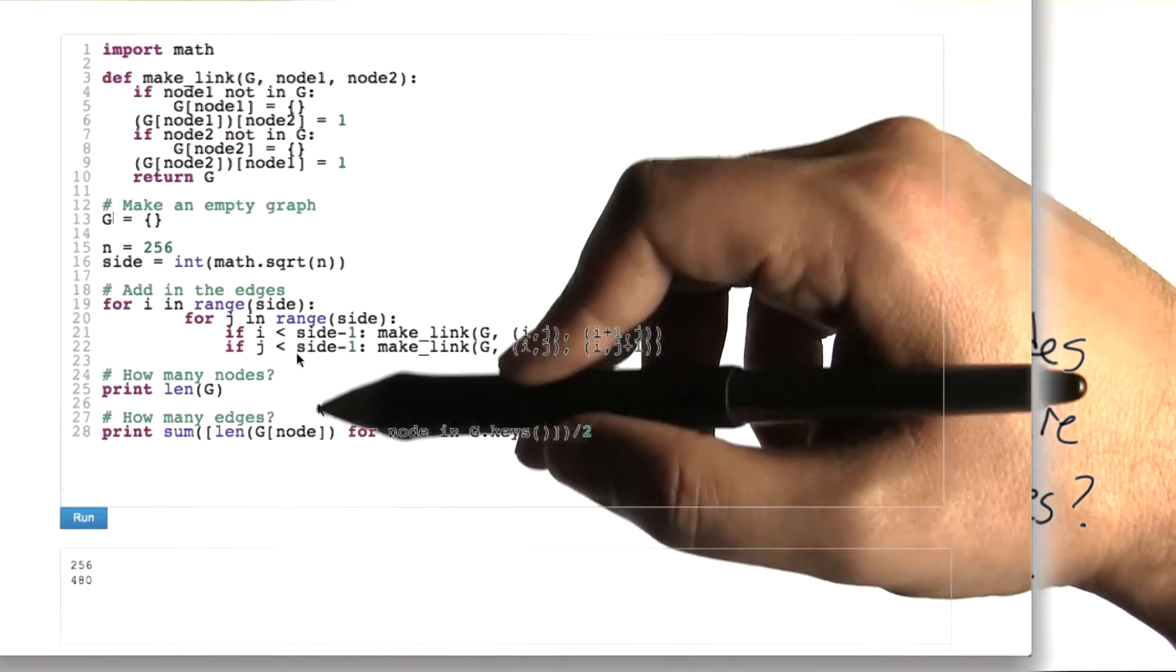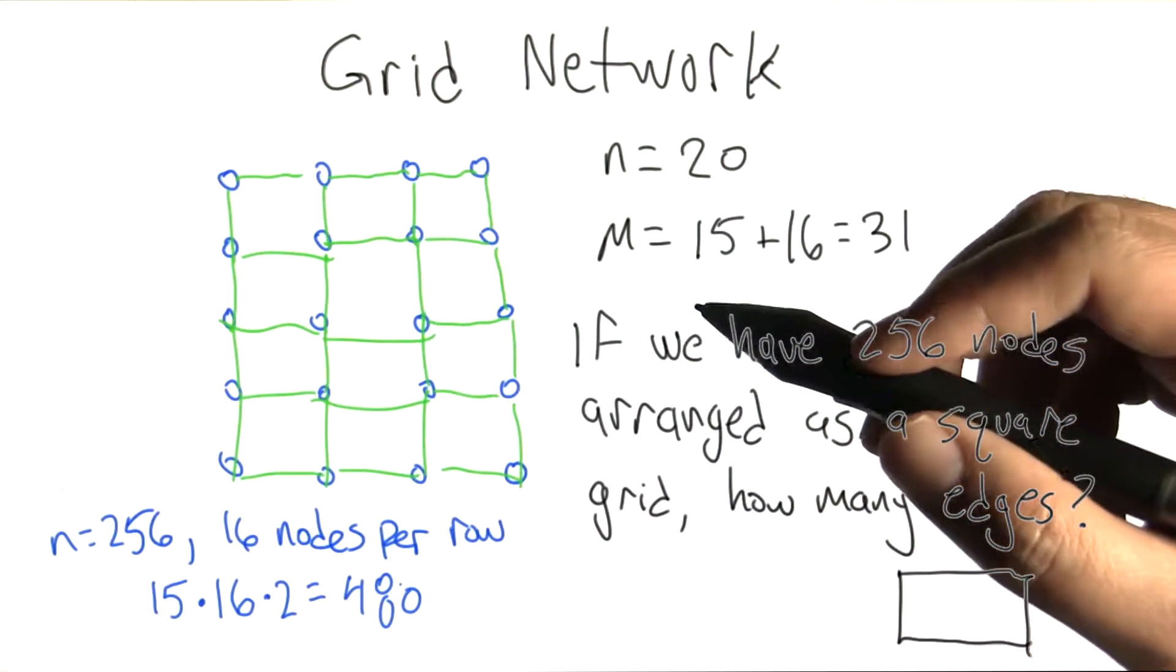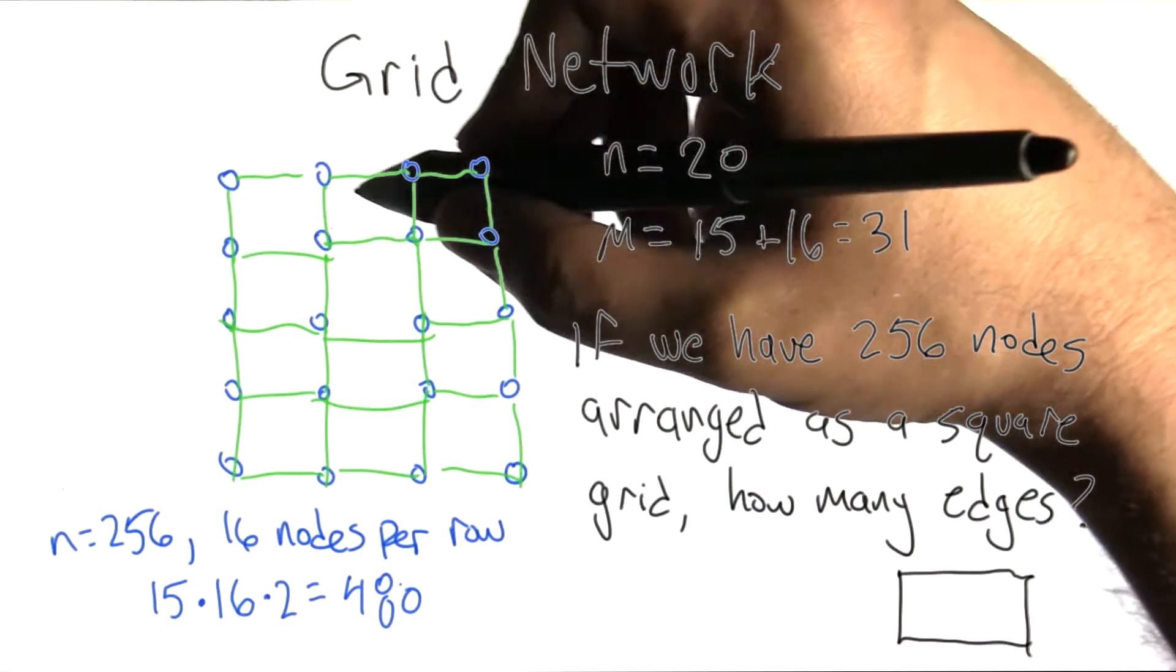So we print out the number of edges in this graph that we created and we get 480. We could do that kind of by reasoning as well, that just like in this grid example before,